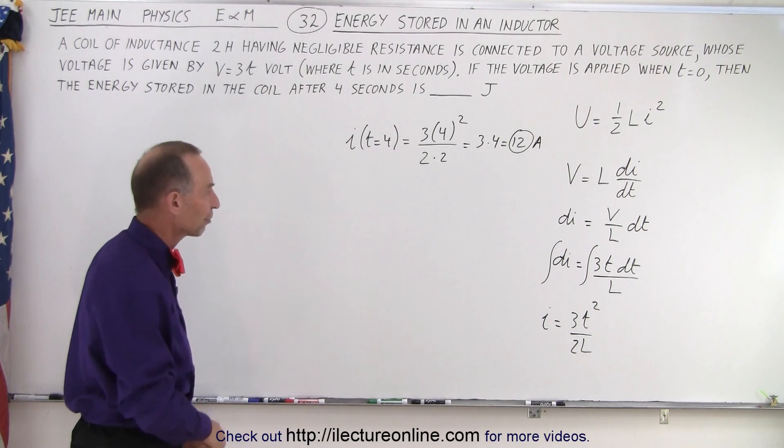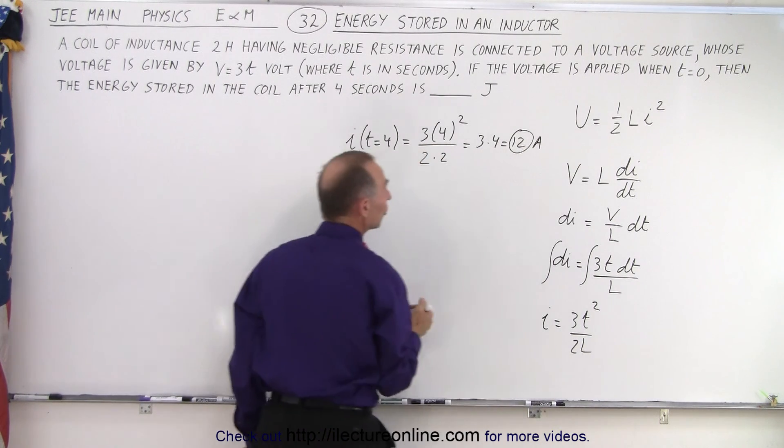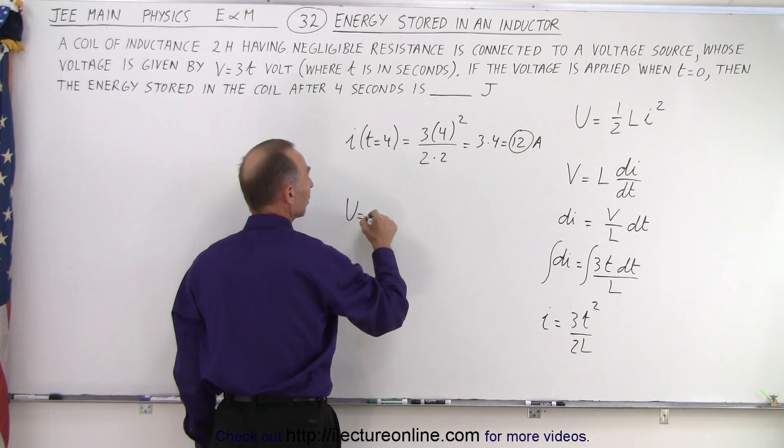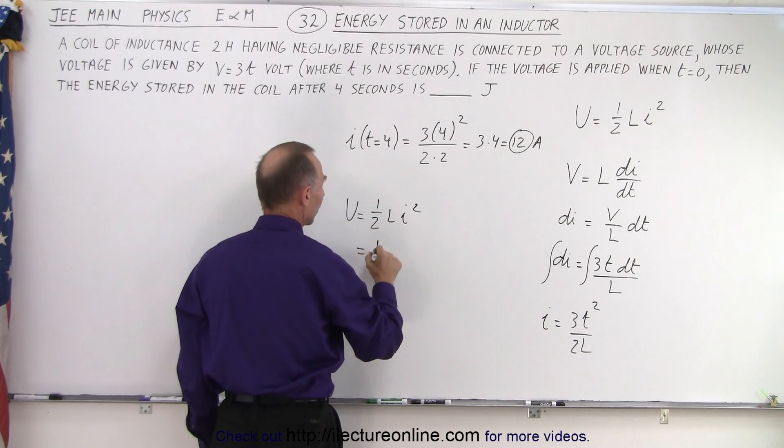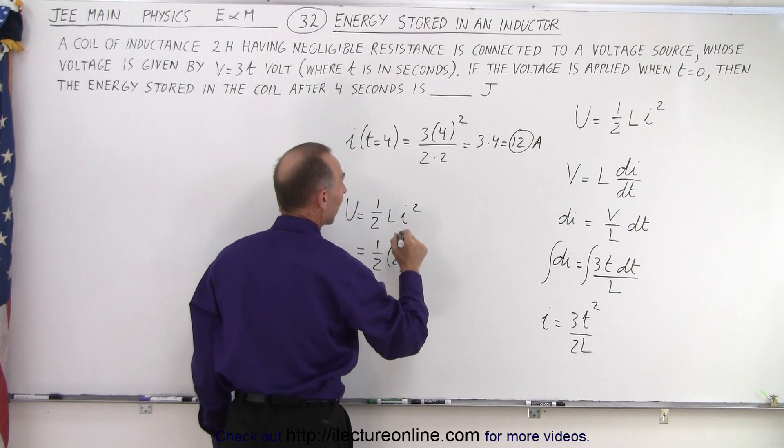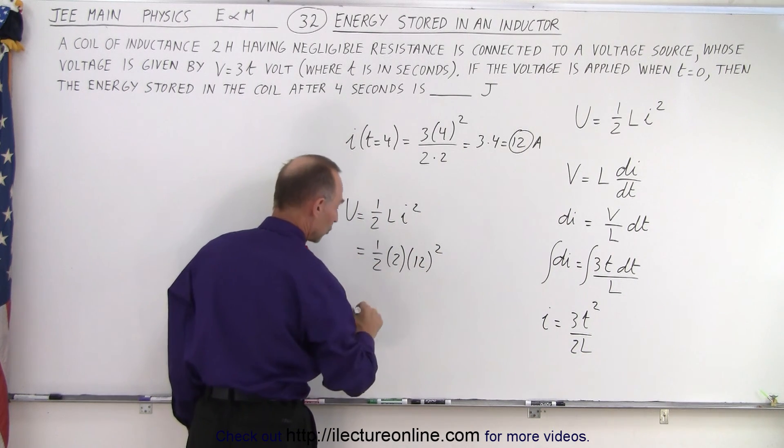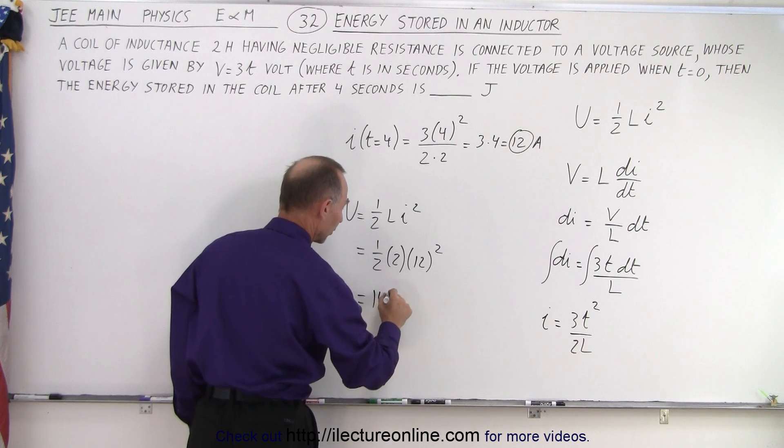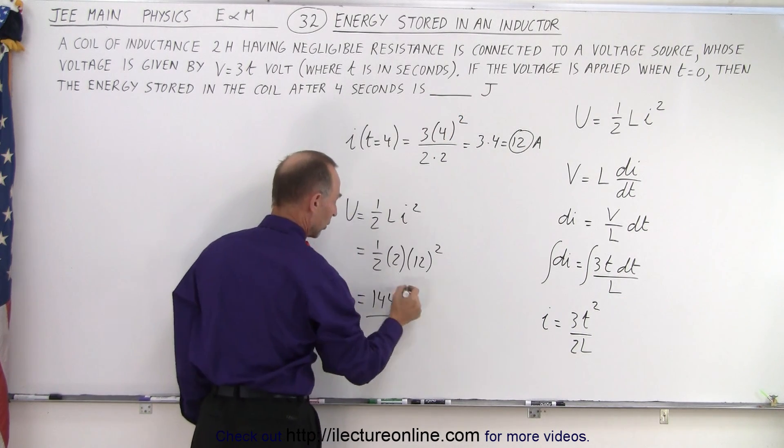And of course that would be in terms of amps. So 12 amps of current after four seconds. So now all we have to do now to find the energy in the inductor is U is equal to one-half LI squared. So in this case that's one-half times L which is 2 times I squared which is 12 squared. This cancels out. 12 squared is 144, so it would be 144 joules, which is what we're looking for over here.